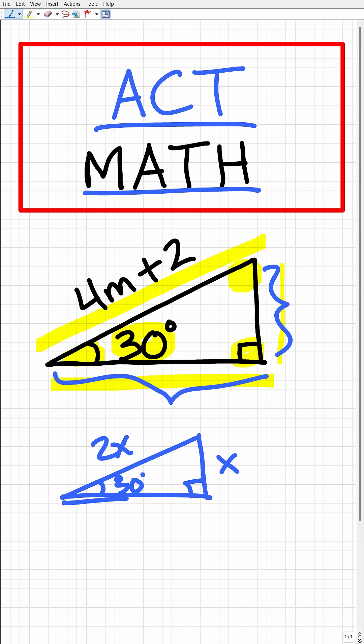And this middle length right here, this last side of the triangle is going to be the shortest side times the square root of 3. Okay, so now that we know something about 30, 60, 90 special right triangles, we should be able to easily solve this problem.